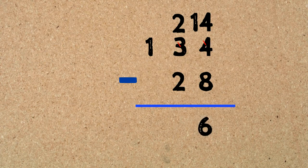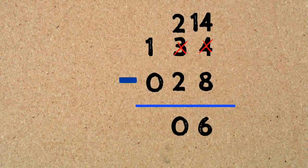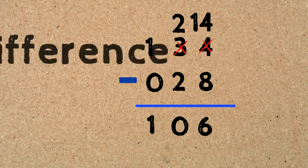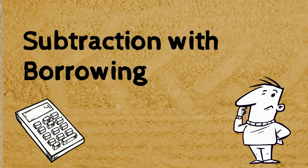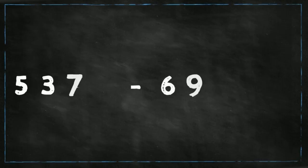Now we're ready to subtract: 14 take away 8 equals 6. Then 2 take away 2 equals 0. And 1 take away 0 equals 1. So the difference between 134 and 28 is 106. This process is called subtraction with borrowing, which is a little bit tricky.